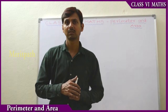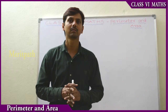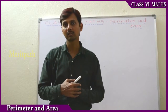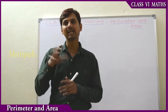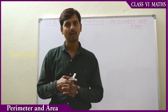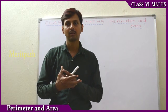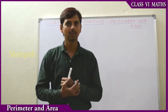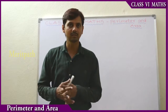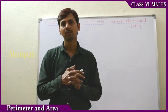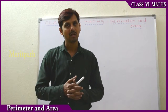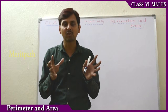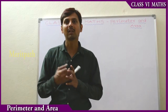Now let's take a quadrilateral ABCD. We add all four sides: AB, BC, CD, and AD. Adding all these four sides gives the length of its boundary, which is called the perimeter of the quadrilateral. Similarly, we find the perimeter for all figures like pentagon, hexagon, heptagon, octagon, nonagon, decagon — we add all the sides of each figure.